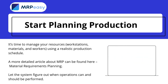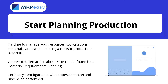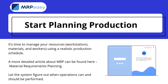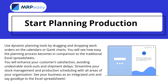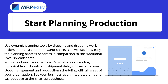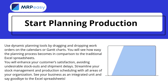This way you can get real-time reports of the production processes. It's time to manage your resources — your workstations, materials, and workers — using a realistic production schedule. Let the system figure out when operations can and should be performed. Use dynamic planning tools by dragging and dropping work orders on calendars or Gantt charts.